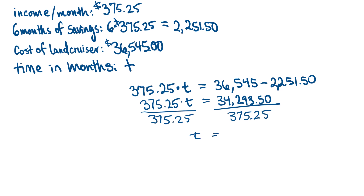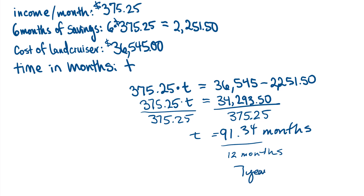T is equal to ninety-one point three four months — that's a long time. If I want to figure out what that is in years, I divide by twelve, and that gives me seven years and eight months. So that's the time until he can afford that Land Cruiser.